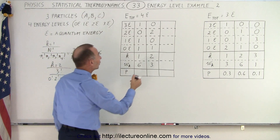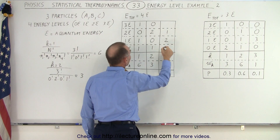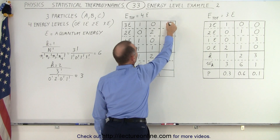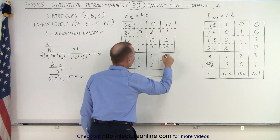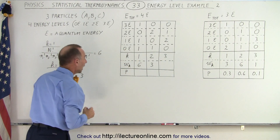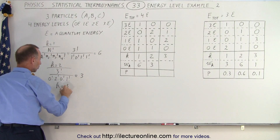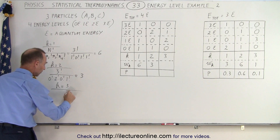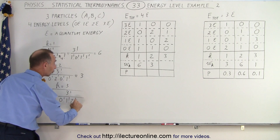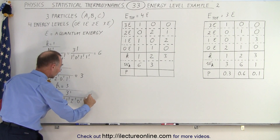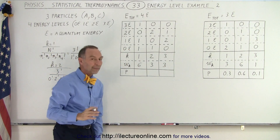Could we have another arrangement? Well, we could have 1 here, which means we would need 2 there and 0 there, with a total of 3 and 0 at the remaining level — that's the final way in which things could be configured. Let's call that the third macrostate. For k equals 3, that would be 3 factorial divided by 0 factorial times 1 factorial times 2 factorial times 0 factorial, which is 6 divided by 2, or 3 again. So there are 3 different microstates.